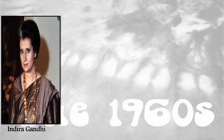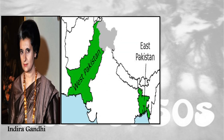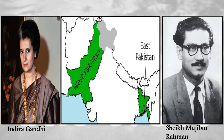Indira Gandhi became the Prime Minister of India in 1966. She was the first and to date only female Prime Minister of India. During her tenure, Pakistan's oppressive policies in East Pakistan resulted in a big movement there. This movement was led by Sheikh Mujibur Rehman and his organization Mukti Bahini. This crisis in East Pakistan affected India as well because millions of refugees came to India.